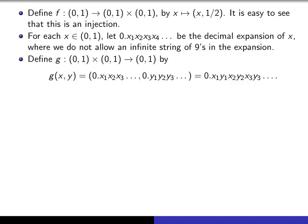So you see I've got x₁, then y₁, then x₂, then y₂, etc. That then creates a number in (0,1), and so that gives us a mapping that maps certainly into (0,1).